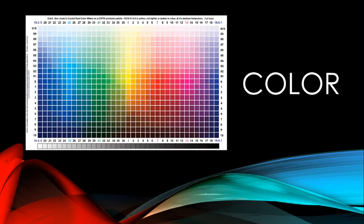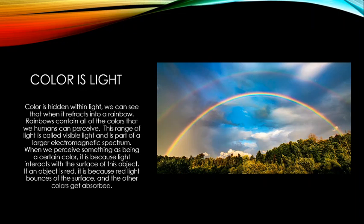Color is light — it's hidden within light. We can see that when it refracts into a rainbow. When a rainbow occurs, sunlight comes down and gets broken up by moisture droplets in the air, and the colors hidden within white light refract out in beautiful arcing patterns.